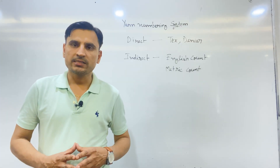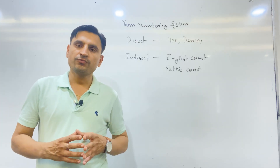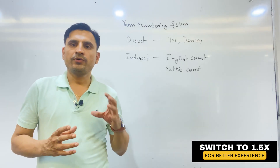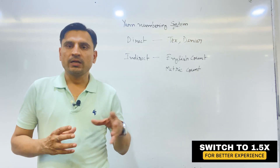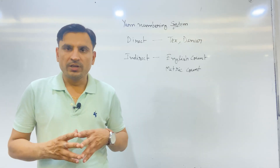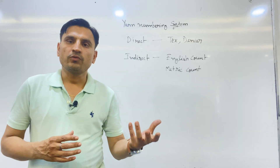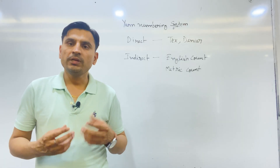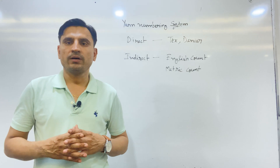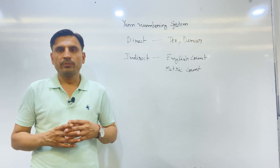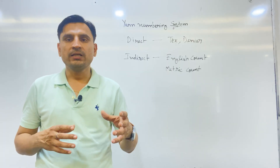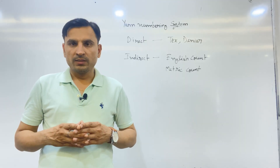Yarn numbering system is basically a system in which we give a number to the yarn. Everything which we buy in our daily life, we need a number — like if we want a shoe we tell the size: 5, 6, or 8. If we want to buy sugar we tell the shopkeeper 1 pound or 2 pounds. Similarly, to buy yarn we tell the manufacturer the number or quantity of yarn needed. Yarn numbering system is a system in which a number is given to the yarn as per the coarseness or fineness of the yarn.